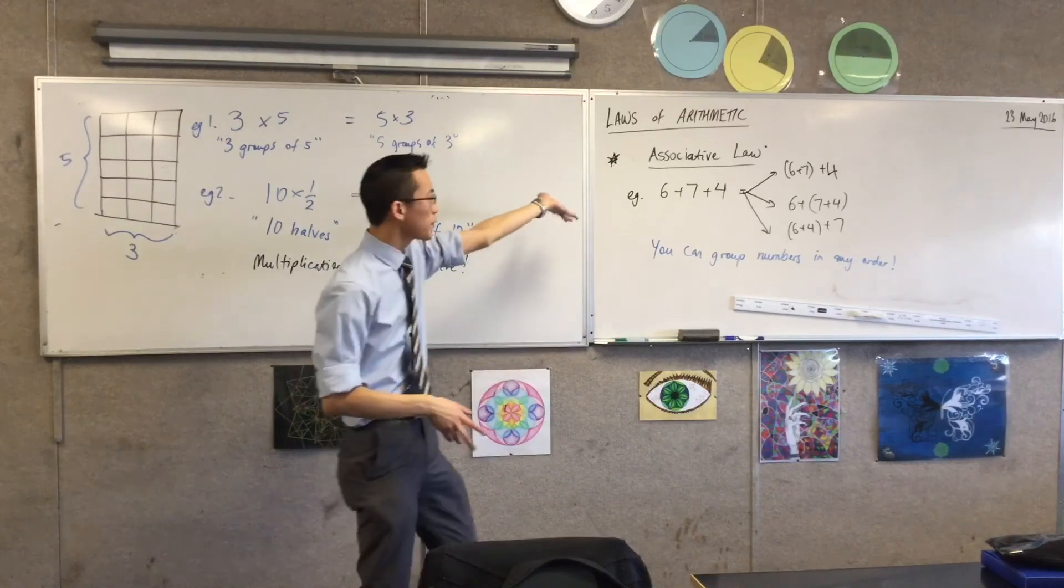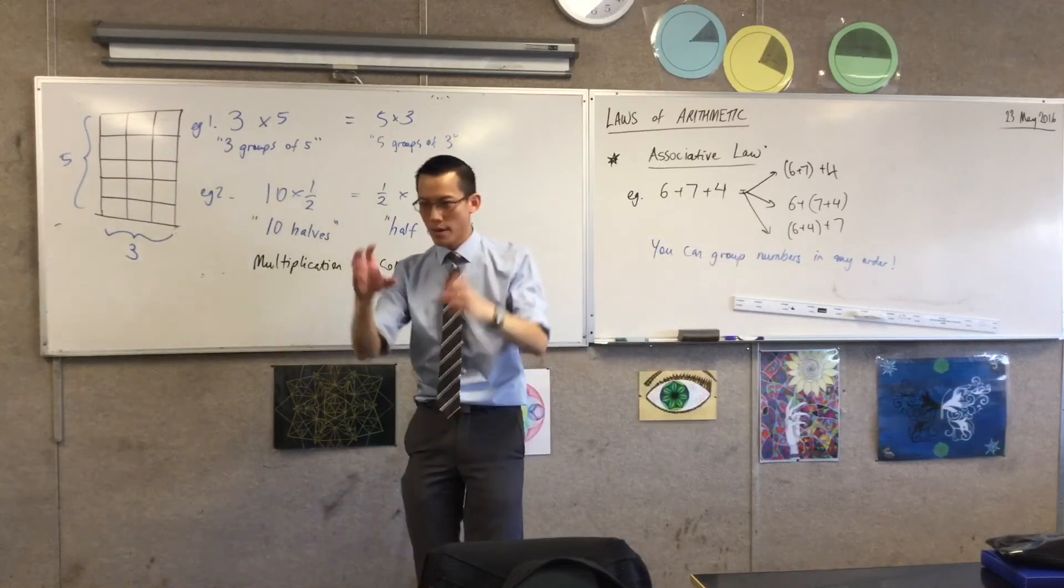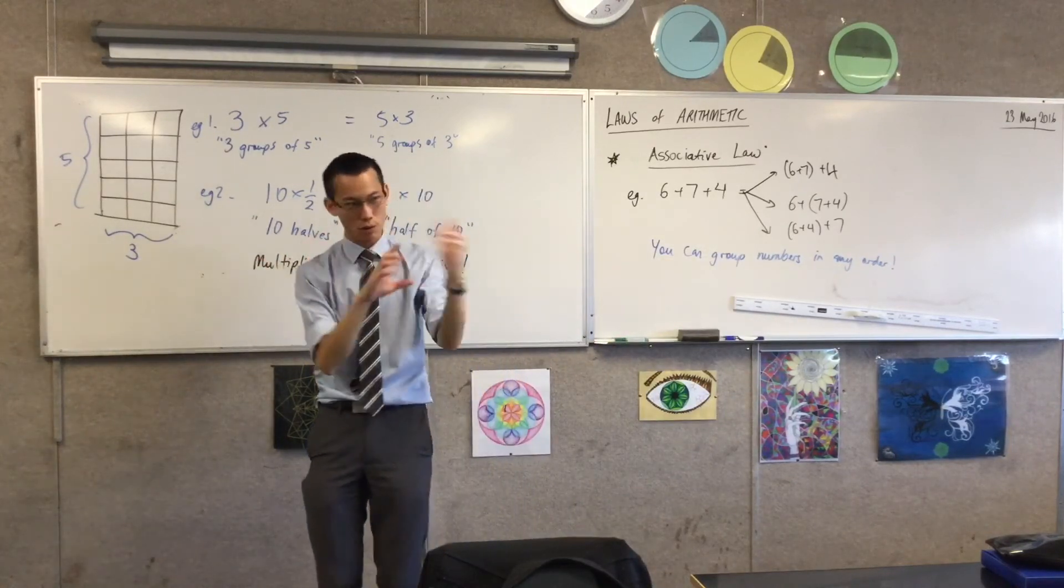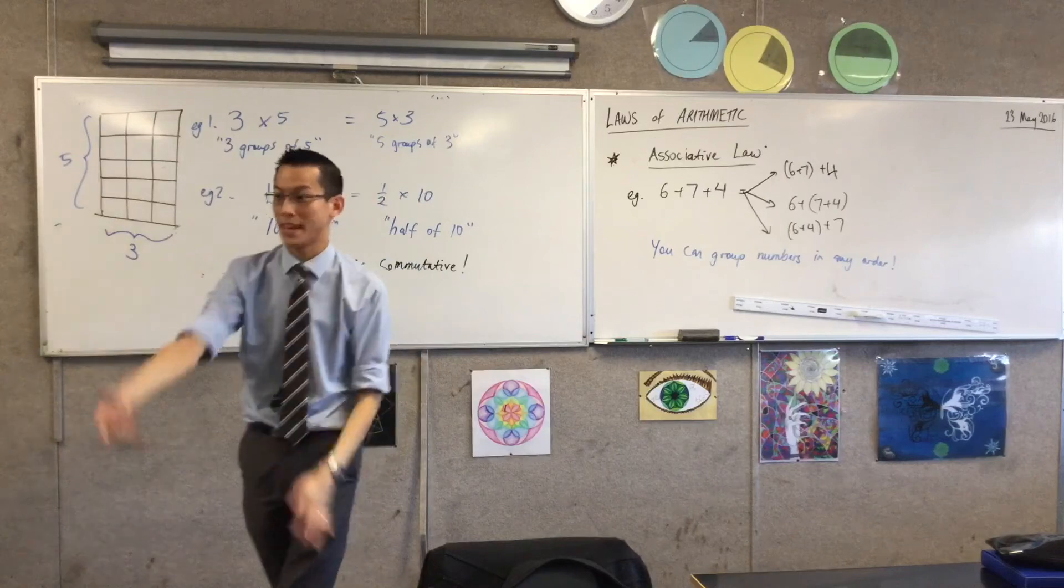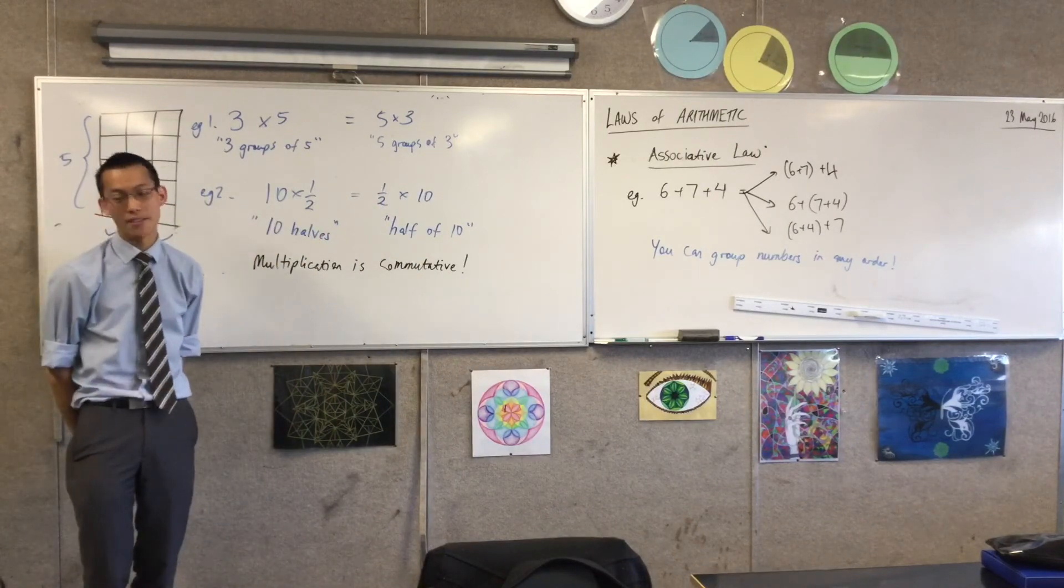And I won't write it, but multiplication is the same thing. If I did six times seven times four, again, you can multiply them, and you can do these two pairs first, or these, or you can shift them around, and whatever. Does this have anything to do with BODMAS? Yeah, it's closely related to that, in fact.